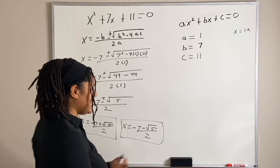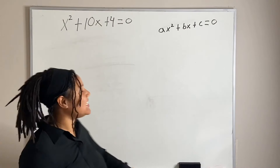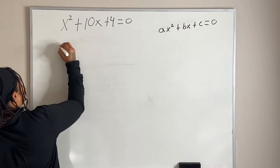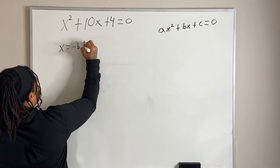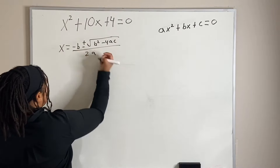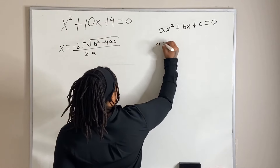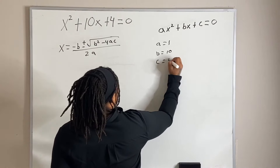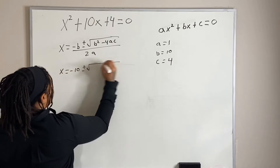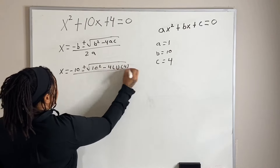Let's look at our second example: x² + 10x + 4 = 0, and we want to solve using the quadratic formula. Writing the formula again: x equals negative b, plus or minus the square root of b squared minus 4ac, all over 2a. Here, a = 1, b = 10, and c = 4. Plugging in: x equals negative 10, plus or minus the square root of 10 squared minus 4 times 1 times 4, all over 2 times 1.